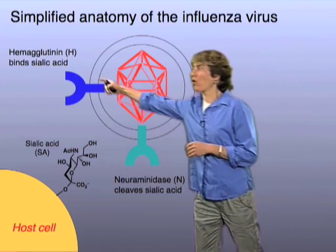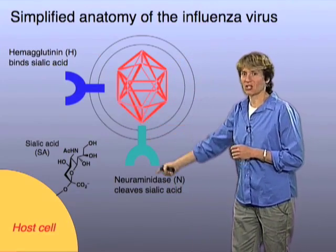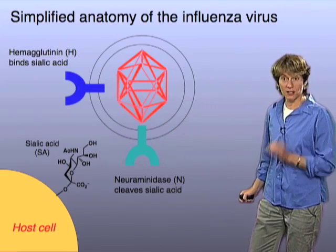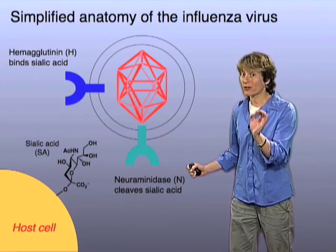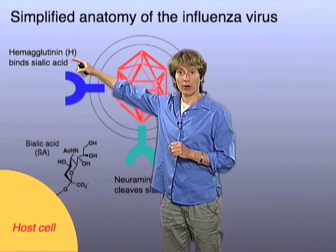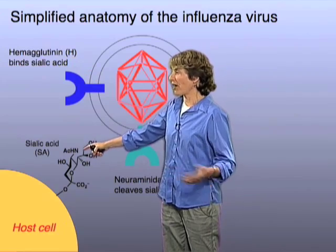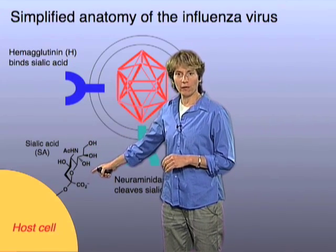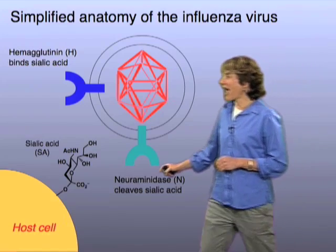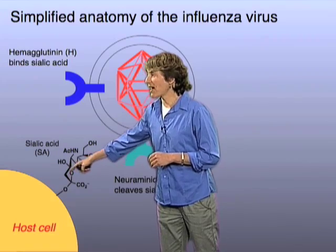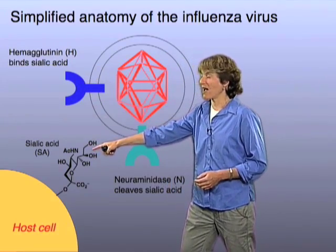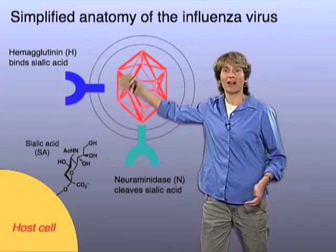The H1 is a certain form of hemagglutinin, and the N1 is a certain form of neuraminidase. We know quite a bit about what these two proteins do — in fact, we even know their molecular structures in very great detail. Hemagglutinin is a receptor; it's a protein that binds to a sugar, and that sugar happens to be sialic acid, which I mentioned before. Neuraminidase is an enzyme that catalyzes the cleavage of sialic acid off of the host cell. So this protein attaches to sialic acid, and this protein cuts the sialic acid off and throws it away.